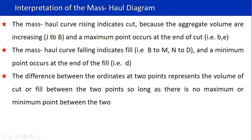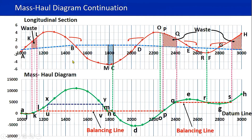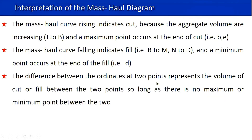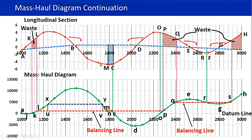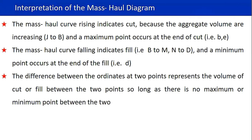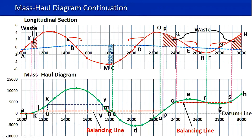The mass haul curve rising indicates cut, because the aggregate volumes are increasing from A to B. A maximum point occurs at the end of the cut. The mass haul curve falling indicates fill — from B to M and N to D — and the minimum point occurs at the end of the fill, where the fill changes to cut. The difference between the ordinates at two points represents the volume of cut or fill between those two points, so long as there is no maximum or minimum point between them.